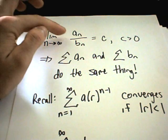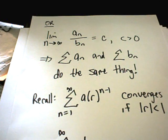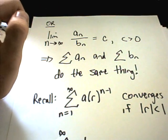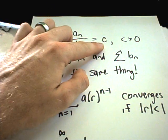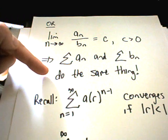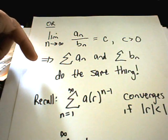Basically, you have some a_n's. You're going to pick another series, and you're going to take the limit of a_n and b_n, the limit of the terms as n goes to infinity. If you get a positive finite number, then both of the series do the same thing. Either they both converge or they both diverge.